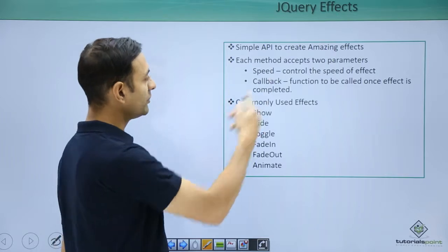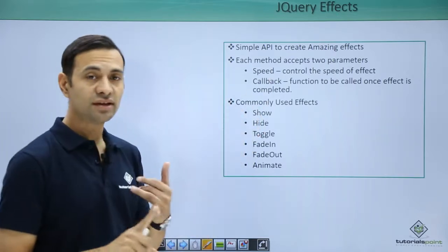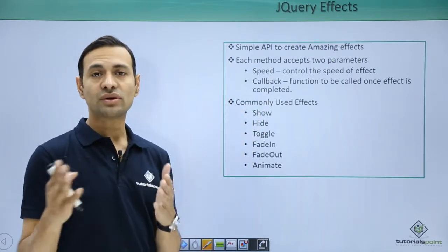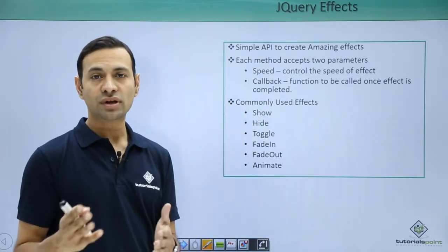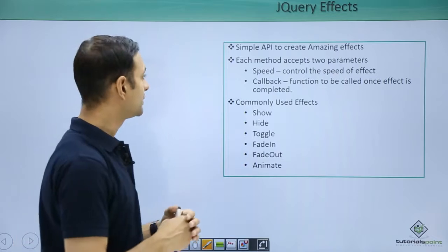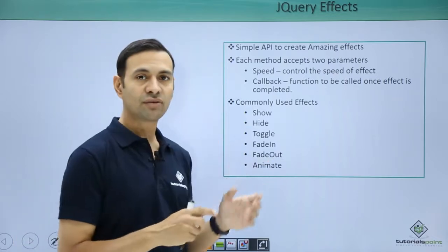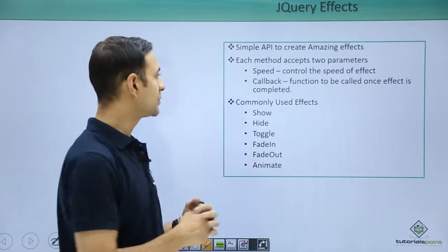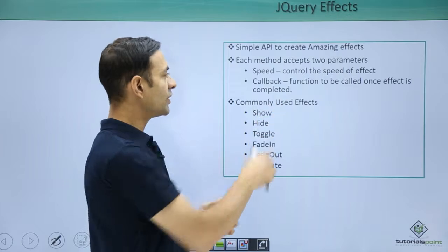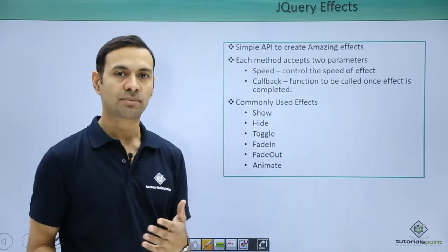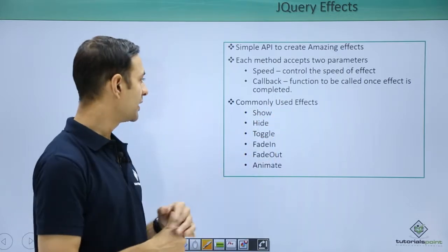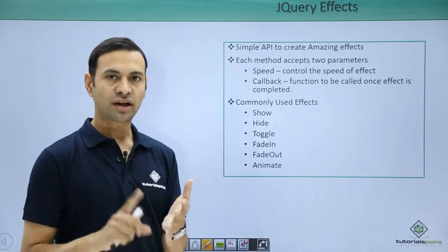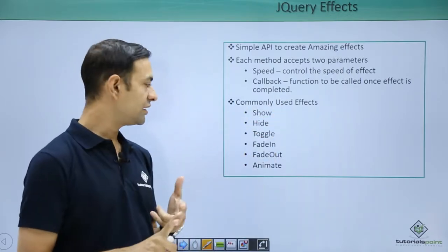Each method has two parameters: speed — at what speed your animation should occur — and a callback — a function to be called once the effect is completed. Commonly used effects are show, hide, fade in, fade out, and toggle.